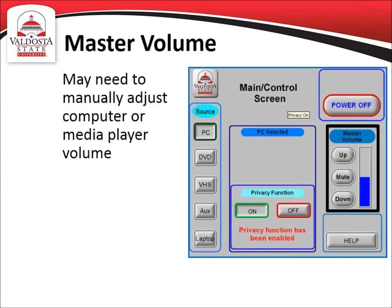Master volume controls the system volume. The up button increases the volume, the down button decreases the volume, and the mute button silences the volume. If you are having trouble with the volume and the master volume is not working properly, you may need to check the computer volume which is located in the bottom right corner of your computer screen, or you may need to check the volume of the media player, such as the volume used to control sound from a YouTube video. For classrooms with microphones, the master volume also controls microphone volume.